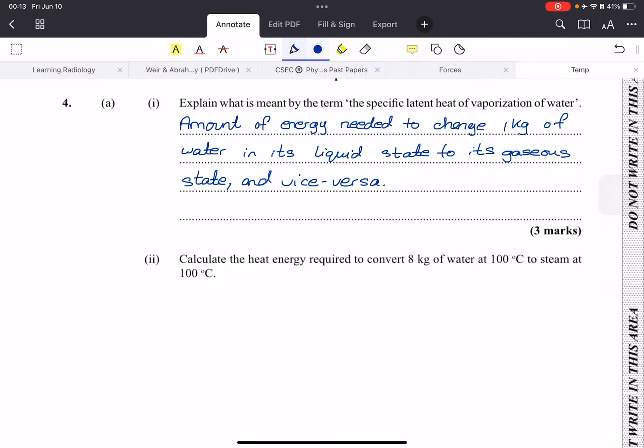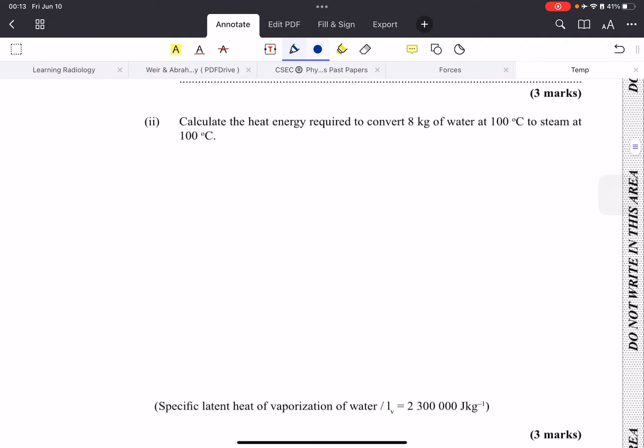Here we have a calculation based on latent heat. The formula used for latent heat is E equals m L, where L is the latent heat of vaporization or fusion, whichever one you have to use. In this case, we want to convert water to steam, so we'll be using vaporization, and they will give you your latent heat of vaporization here; there's no need to memorize it.